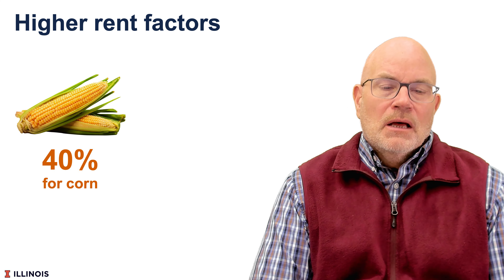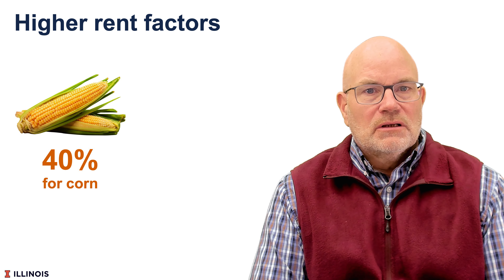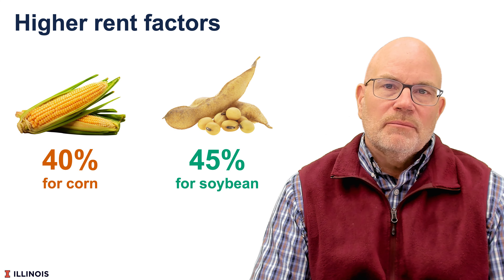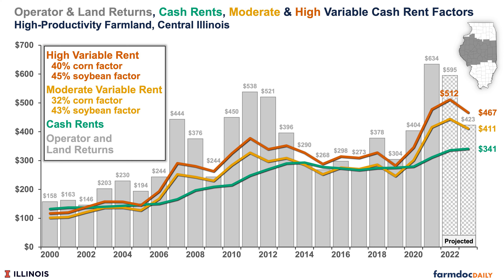There are leases with higher rent factors, and I'm going to show an example with a 40% rent factor for corn and a 45% rent factor for soybeans. That lease will result in, over time, a $30 higher return than our 32% corn factor and 43% soybean factor. And in 2023, it results in a $467 rental payment from the farmer to the landowner, which is above our $423 projected operator and land return. Variable leases with high rent factors have the potential to generate negative returns for farmers in 2023.